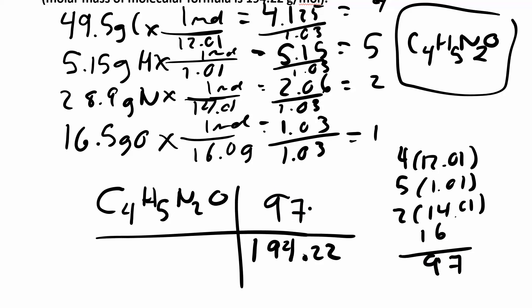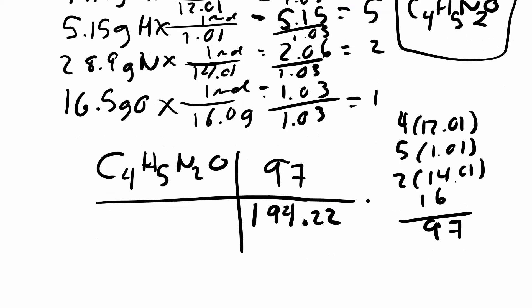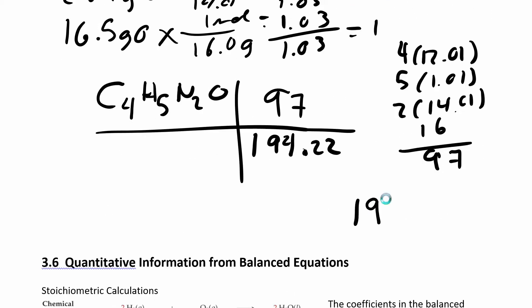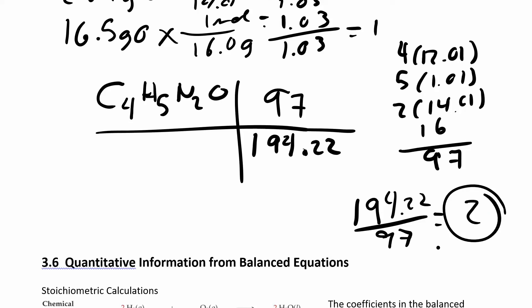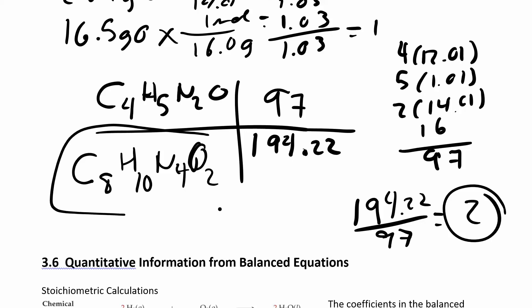Next, divide 194.22 by 97, which gives about 2. Now multiply all the subscripts by 2: C8, H10, N4, O2. This says we have twice as many of all these elements. So the molecular formula is C8H10N4O2. Do a bunch of homework problems just like that and you should be fine.